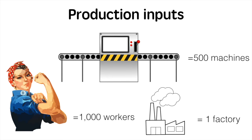We need to consider the relationship between our production inputs and our production output. In this case we are making cars. The production inputs include labour, some machinery and a factory. To simplify we'll use these numbers. In this tutorial the images represent a specific quantity: each machine image represents 500 units, each labour image represents 1000 workers, and the factory only represents one factory.